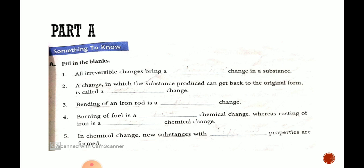Then bending of an iron rod is a physical change. Iron rod ko bend kiya toh obviously it is not becoming something new, so it can be physical change. Burning of fuel is a fast chemical change, whereas rusting of iron is a slow chemical change. Fuel jal raha hai toh woh fast jal raha hai, whereas rusting dheerhe dheerhe hota hai.